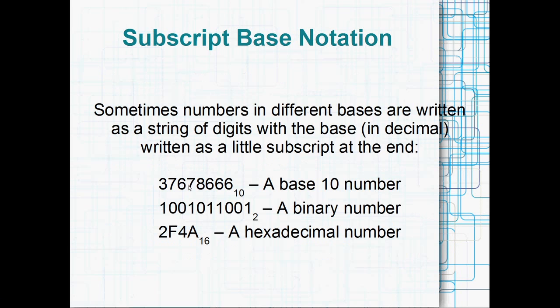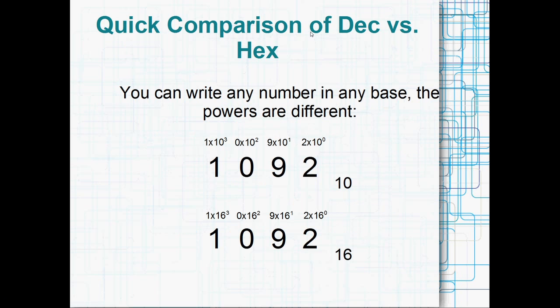So just a bit of notation here, you might sometimes see subscript base notation. This is just a nice way to write out numbers in different bases, so you'll see the base after the number as a subscript. So something like this might be a base 10 or decimal number. Whereas this one, a string of ones and zeros followed by a little two, that could be a binary number. And this final one which has got a few letters mixed in there as well, that could be a hexadecimal number or base 16. So you can write the base as a little subscript.